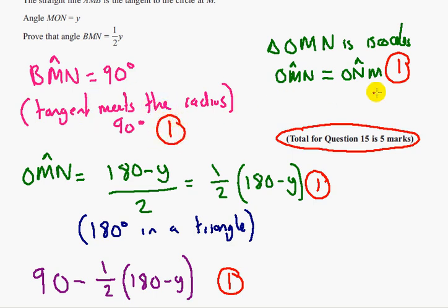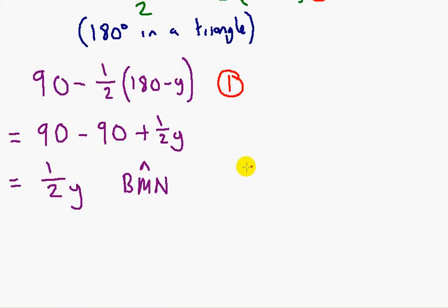And the last mark comes from a correct conclusion for angle BMN accompanied by the correct calculations. So the correct conclusion for BMN, and we've done that. So that's the final mark there. So question 15 is worth 5 marks in total. And that's it.